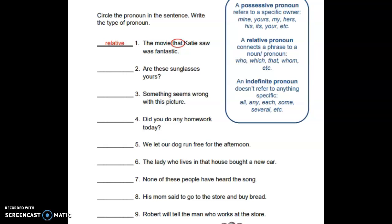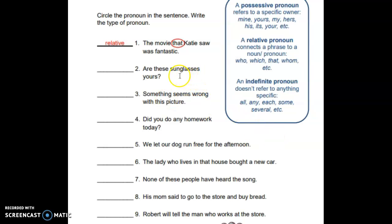The instructions say to circle the pronoun in the sentence and write the type of pronoun. Number one: 'The movie that Katie saw was fantastic.' In your toolbox, the pronoun 'that' falls under relative pronouns, so you would circle 'that' and write 'relative' because that's the type of pronoun.